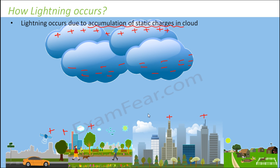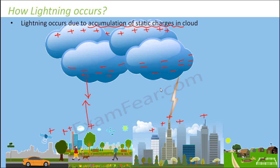All the tall buildings, tall trees — everything will have positive charges on their upper side, because the bottom layer of the clouds is negatively charged. So the ground below the cloud becomes positively charged. There will be attraction between these negatively charged cloud particles and the positively charged ground. They strike each other, causing electric discharge — the spark we see as lightning. Lightning is nothing but electric discharge.